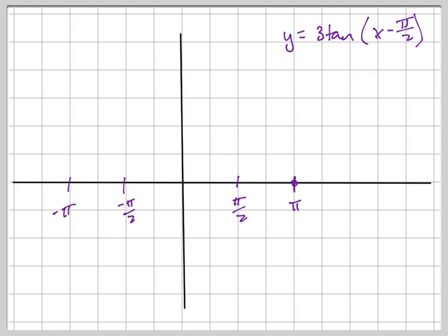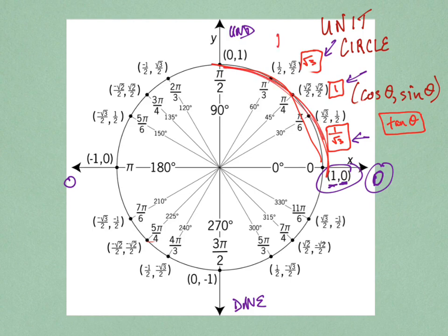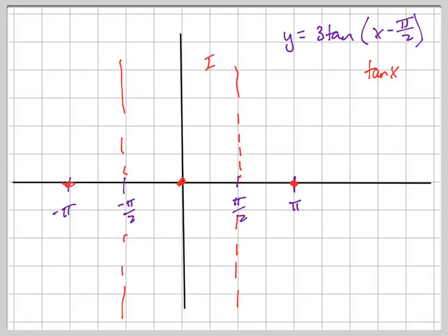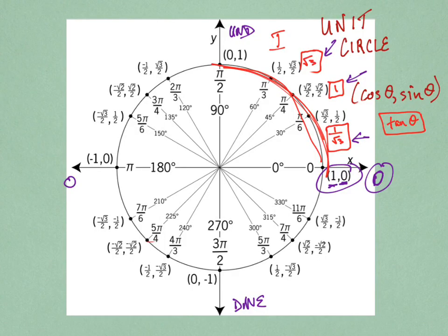Let me show you what the basic tangent graph looks like. The tangent x graph hits 0, 0, 0 at every multiple of pi, and at all the other points — pi over 2 and negative pi over 2 — it has a vertical asymptote because it's undefined there. On the graph, between 0 and pi over 2 is your first quadrant, then second, third, and fourth quadrants. Going left, negative pi over 2 is also your fourth quadrant.